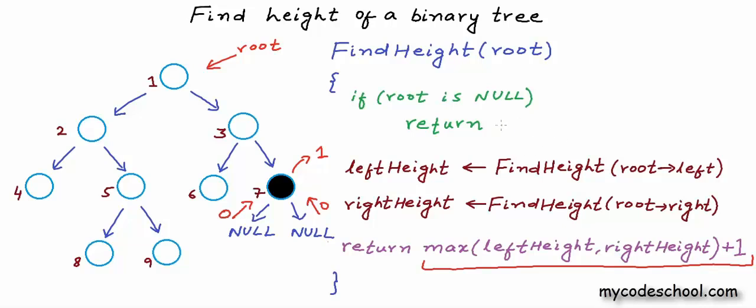What we can do is we can return minus 1. When we are returning minus 1 then this edge to null that does not exist but still was getting counted will be balanced with this minus 1. I hope this is making sense and going by convention also height of an empty tree is set to be minus 1.